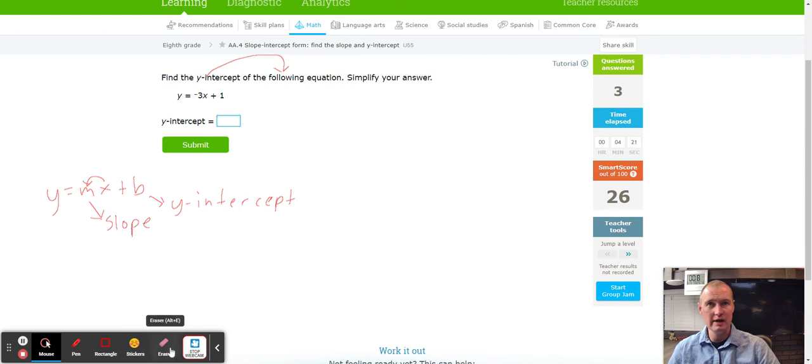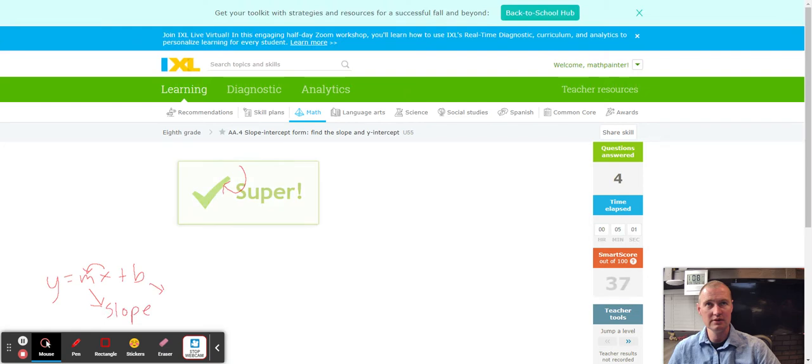Now we're going to look for the y-intercept. The y-intercept is in a different place this time, so the y-intercept is going to be at the end. So the value that has no x is going to be the y-intercept, so in this case the positive one. So again, with the x slope, without the x y-intercept.